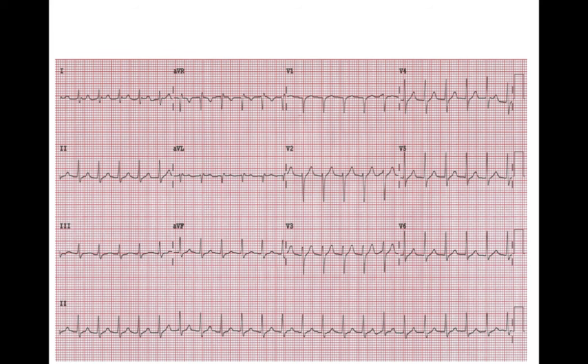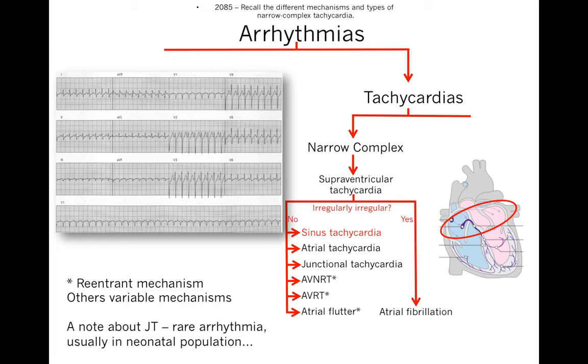This is an example of a narrow complex tachycardia. It's hard to tell exactly what kind it is — it's hard to see any P waves — but the QRS complex is narrow. So the differential is sinus tachycardia, atrial tachycardia, junctional tachycardia, AVNRT, AVRT, or atrial flutter.